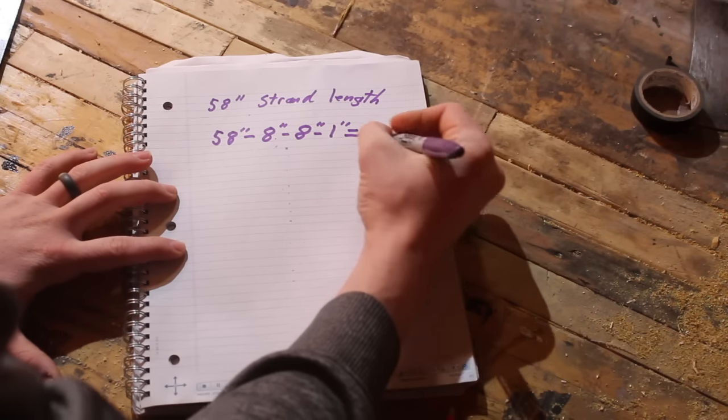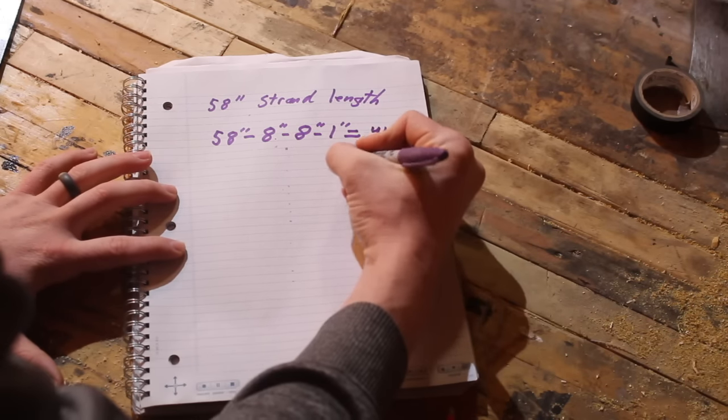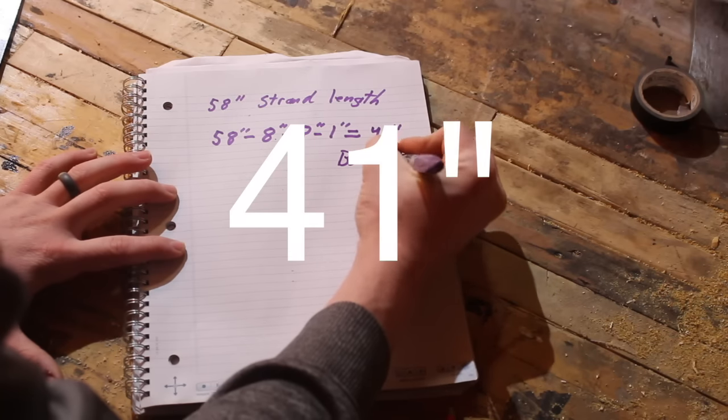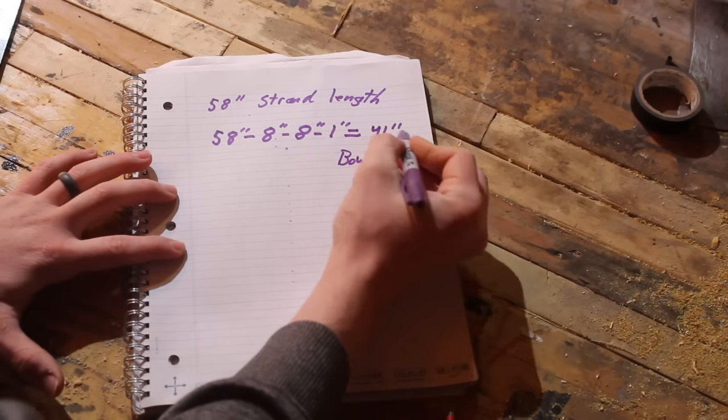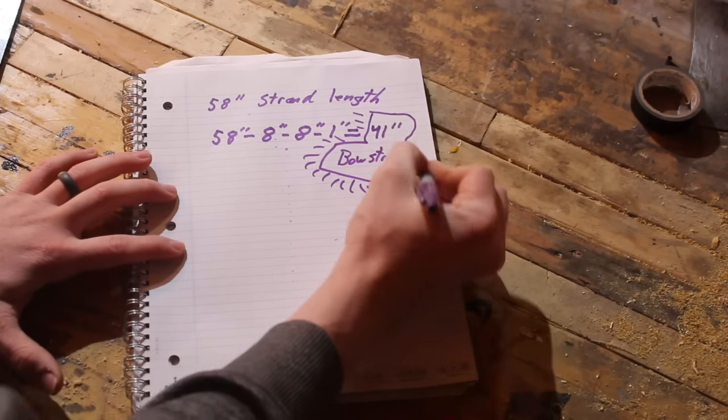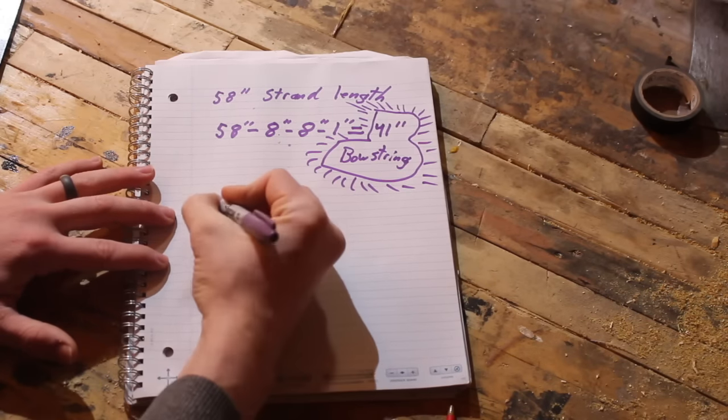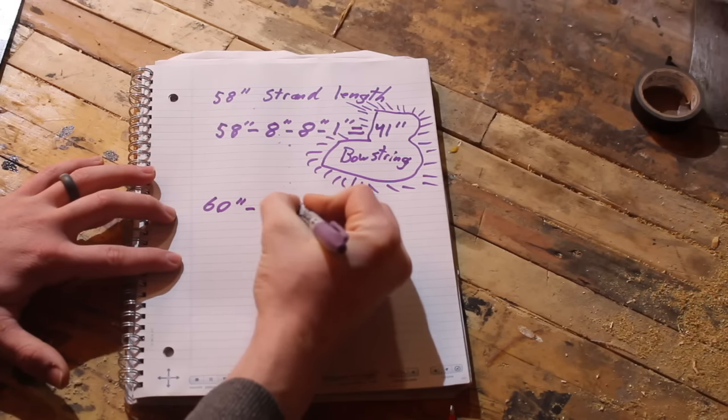So my bundle of 58 strands is going to turn out for me a 51 inch bowstring. So to make it simple all you have to do is subtract 17 inches off of the total length of your strands and that'll be the size of bowstring you will get in the end.